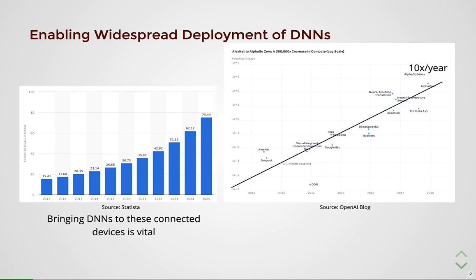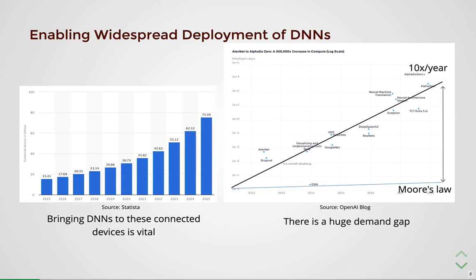OpenAI recently projected that the compute requirements of DNNs are growing at a rate of 10 times per year. In comparison, Moore's law is only growing at a rate of 3% per year, creating a huge demand gap between the compute demands of DNNs and the compute supply from transistor scaling. This precludes DNNs from being deployed to the many billion connected devices. To enable efficient deployment, we need to bridge this demand gap by building accurate and efficient DNNs.